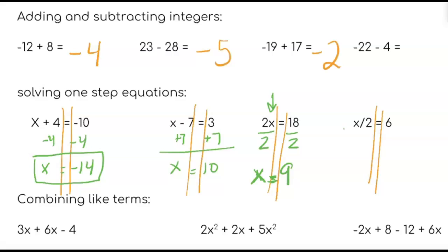This one is a little trickier because this says x divided by two equals six. So to get that x by itself you need to do the opposite. The opposite of division is multiply. So you're going to multiply by two, multiply by two. So you're really left with x over two times two over one. The twos cancel out. So you're only left with x equals six times two is 12.